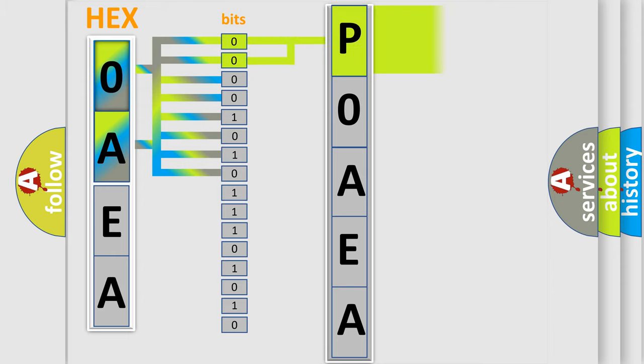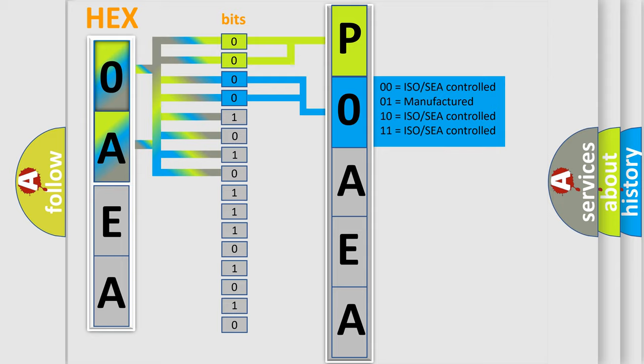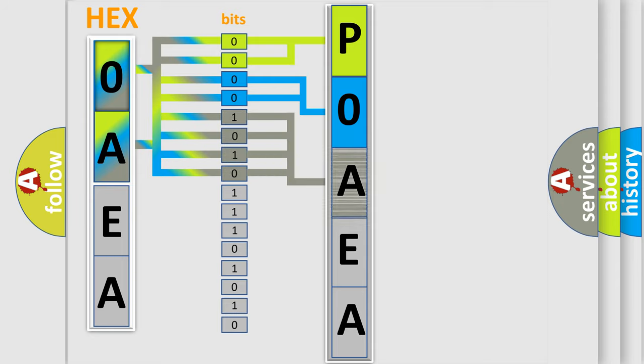By combining the first two bits, the basic character of the error code is expressed. The next two bits determine the second character. The last four bits of the first byte define the third character of the code.